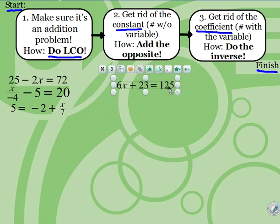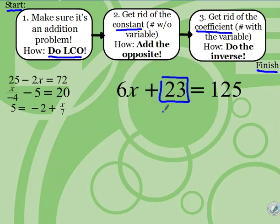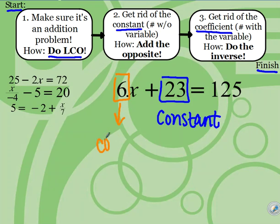We're going to start with a simple one: 6x plus 23 equals 125. The first thing I want to do is label the constant and the coefficient. The constant is the one that is not next to the variable. This guy is right next to the variable, kind of hugging it — so that's the coefficient. The constant is the one not right next to the variable, so 23 is the constant, which means 6 is the coefficient.